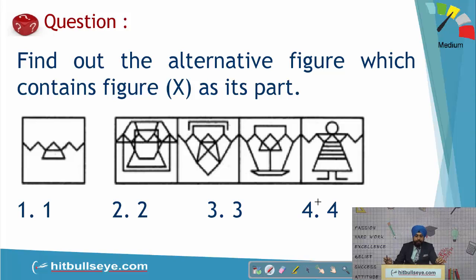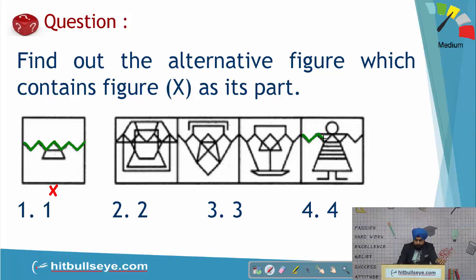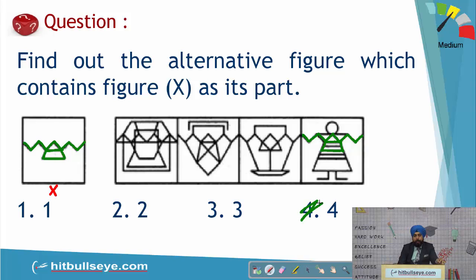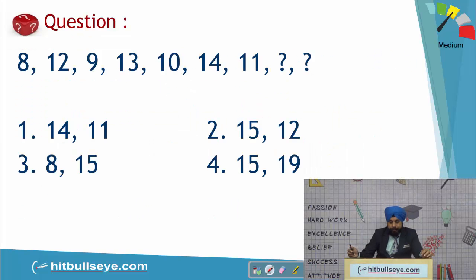Again, a similar question — which figure contains figure X? Analyzing the figure, I'll mark it in green: you can see this line, then this straight line, then this trapezium-like shape at the bottom. Mind it, it is not the first option that matches; it will be the third one. So the answer again becomes choice number four.